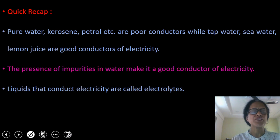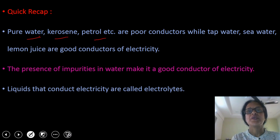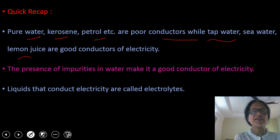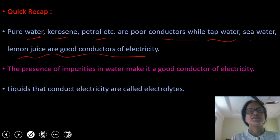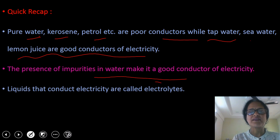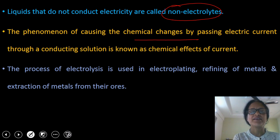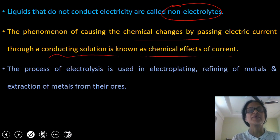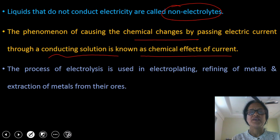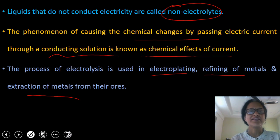Now I want to discuss a few important terms. Pure water, kerosene, petrol etc. are poor conductors. While tap water, sea water, and lemon juice are good conductors of electricity. The presence of impurities in water makes it a good conductor of electricity. Liquids that conduct electricity are called electrolytes. The liquids which do not conduct electricity are called non-electrolytes. The phenomenon of causing a chemical change by passing electric current through a conducting solution is known as the chemical effects of current. This process of electrolysis finds various uses — electrolysis is used in electroplating, refining of metals, and extraction of metals from their ores, which I will discuss in the next video.